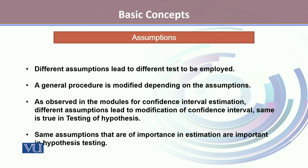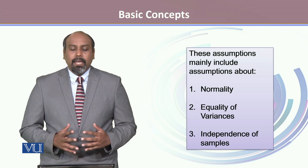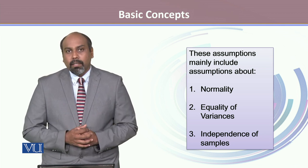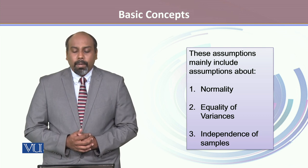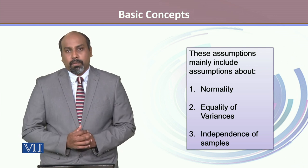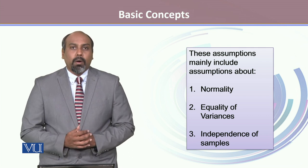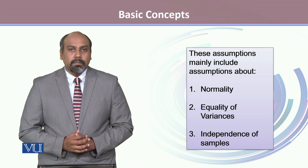The second important step is to test for the assumptions. Different assumptions lead to different tests being employed, and a general procedure is modified depending on the assumption — as we have seen with confidence interval estimates. With a slight change in any assumption, the whole process changes. In testing of hypothesis, the assumptions mainly include assumptions about normality — that is, the distribution of the population from which the sample comes — the equality of variances, and the independence of the sample. These three assumptions play a very vital role when performing testing of hypothesis.